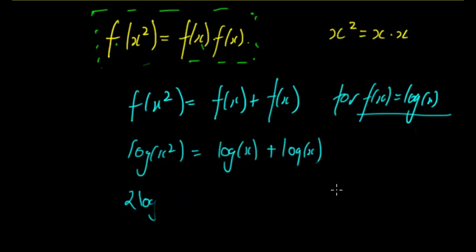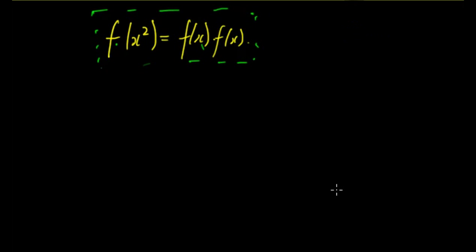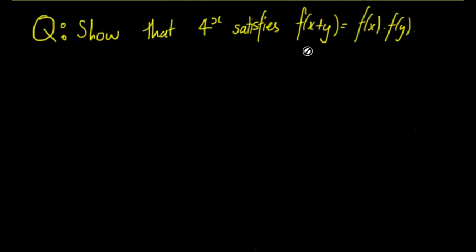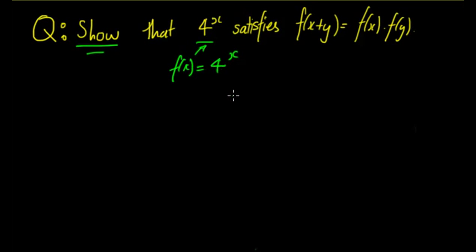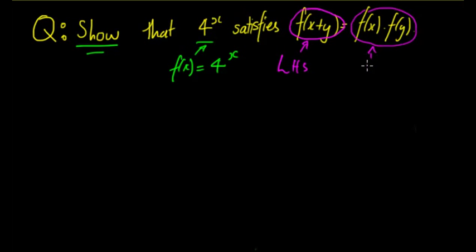We'll do an example to show how you can use a systematic step-by-step approach and how you should set out your working. The question is: show that 4^x satisfies f(x+y) = f(x)·f(y). This is a 'show that' question, which means we need to prove it is already satisfied. We have f(x) = 4^x. The equation says f(x+y) = f(x)·f(y). Think of this as a left-hand side and a right-hand side — referred to from now on as LHS and RHS.